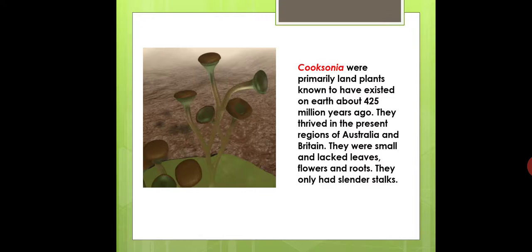Cooksonia thrived in the present regions of Australia and Britain. These were small, green-colored, autotrophic plants, but they had no leaves, flowers, or roots. It is an early representative of land plants.